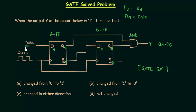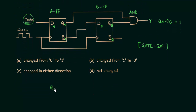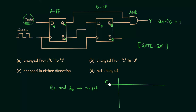In this problem we need to find the change in data when output Y equals 1. When no clock is given to the two flip-flops, QA and QB remain in their reset state. To find the correct answer I will make a table with columns for clock, data, and the two outputs QA and QB. For the first clock pulse, let's say data equals D1.